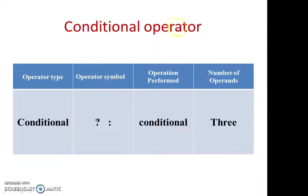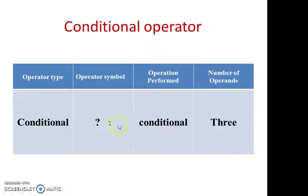Now let us see the conditional operator. This uses a question mark (?) and a colon (:), and takes three operands. Before the question mark we check the condition — if true, it goes to the variable specified between the question mark and colon; if false, it goes to the value after the colon. We can see these things in an example.